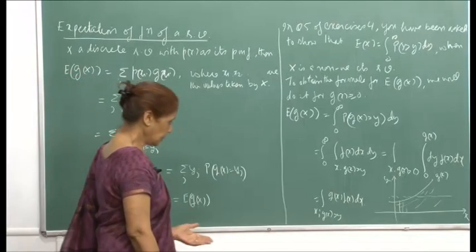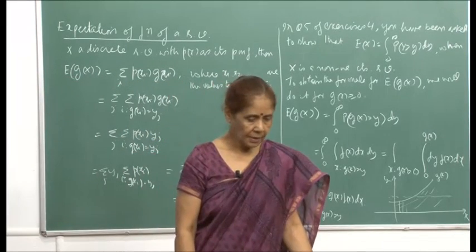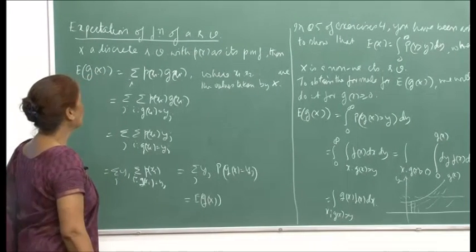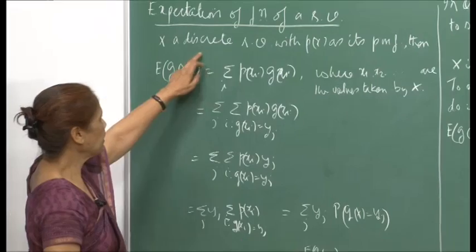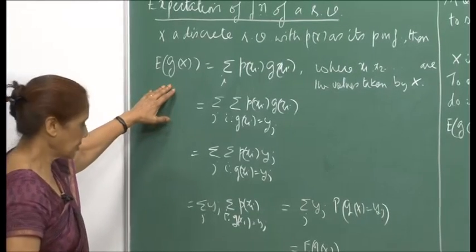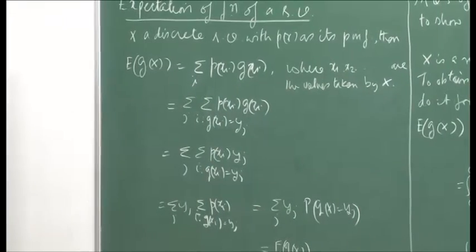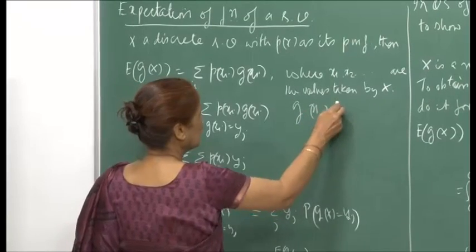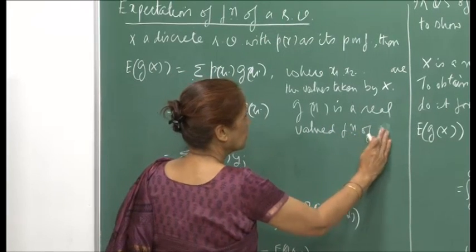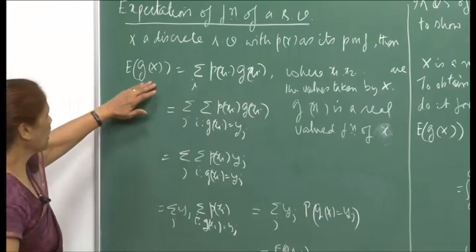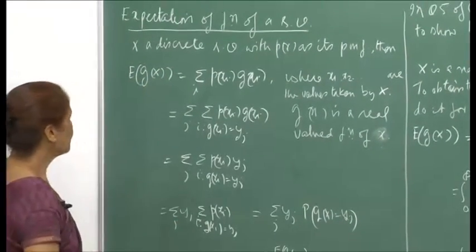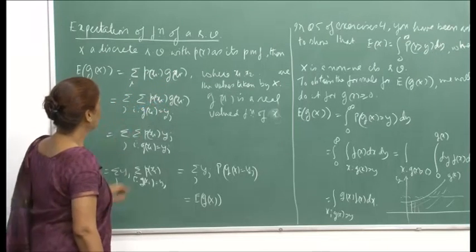Let me now continue with the last lecture. I discussed functions of random variables — how to find their CDFs, PDFs, and PMFs. Now let us talk about expectation of a function of a random variable. If x is a discrete random variable with PMF p(x), and g is a real-valued function of x, then g(x) will itself be a random variable. The expectation E[g(x)] = Σᵢ p(xᵢ) g(xᵢ).